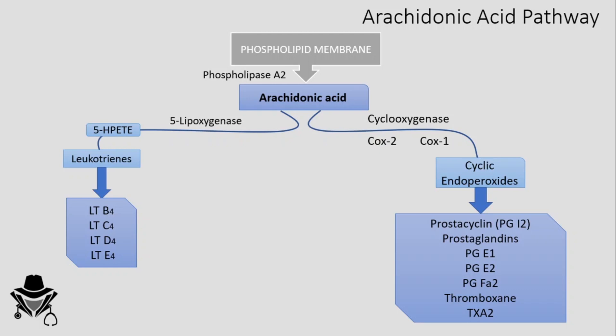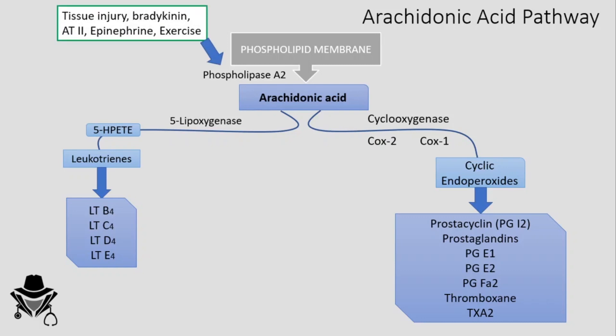There are many things which can alter this pathway. First, certain stimuli can act on the enzyme phospholipase A2 — for example, tissue injury will stimulate phospholipase A2 and produce the end metabolites of inflammation and pain sensation. Next, the group of drugs called corticosteroids: corticosteroids are the most powerful anti-inflammatory drugs. They act by inhibiting phospholipase A2, thus inhibiting all subsequent events of this pathway.